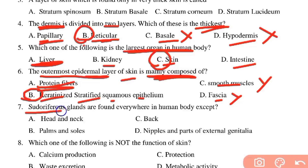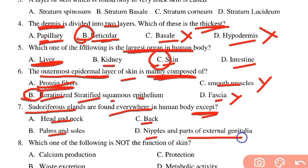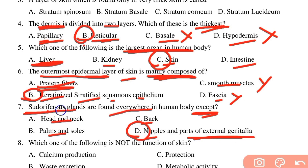Sudoriferous glands, or sweat glands, are found everywhere in the body. The question asks where they are NOT found. The options include head and neck, palms and soles, back, and nipples and parts of genitals. Sudoriferous glands are found in nearly all parts of the body.